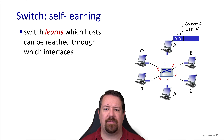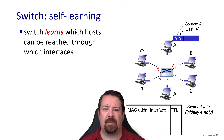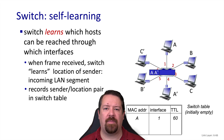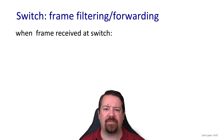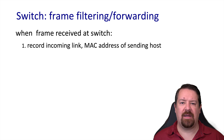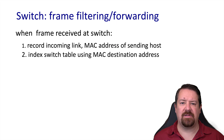Consider A sending a frame to A'. At this point, we'll say the switch has just started up and its forwarding table is empty. However, any time the switch receives a frame, it can read the source address, and it's just learned what interface it can use to reach that source. So from this incoming frame, it's learned that A is on interface 1. The switch records the source MAC address and the port it came in on to populate its forwarding table, using the MAC address as the key or index to this table.